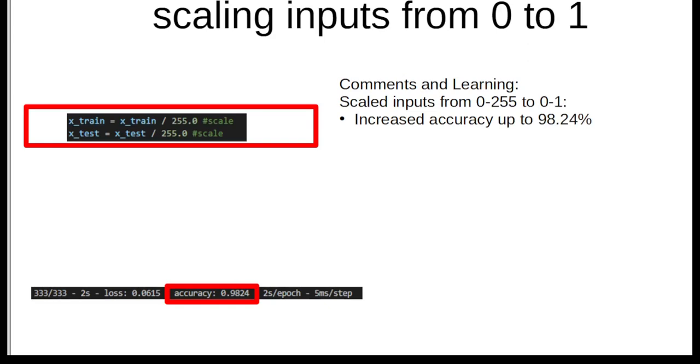After that, I scaled the inputs from 0 to 1, because it was pegged all the way up to 255. I scaled the inputs from 0 to 255 on each of the three color channels down to a range of 0 to 1, and that increased the accuracy very well. We went from 70 and a half to approximately 98 and a quarter. That had a really good impact on the accuracy of the model.